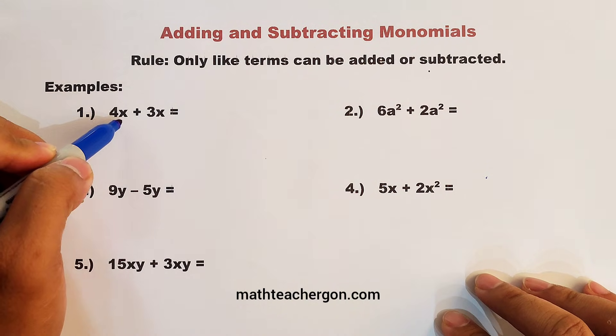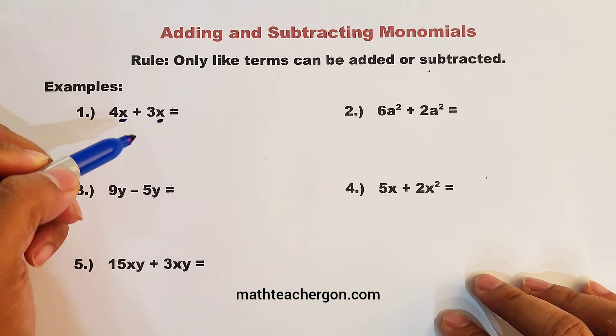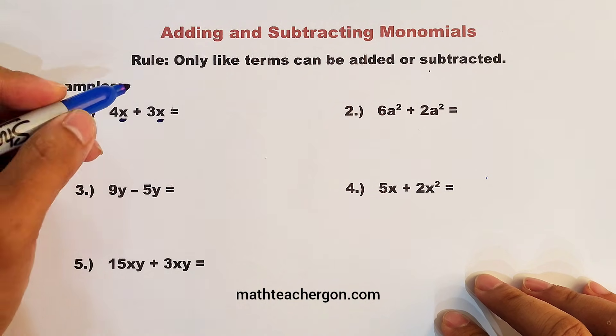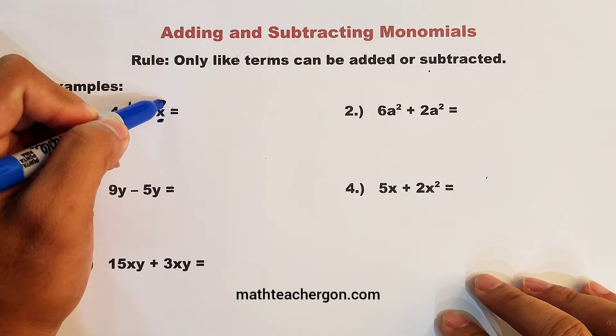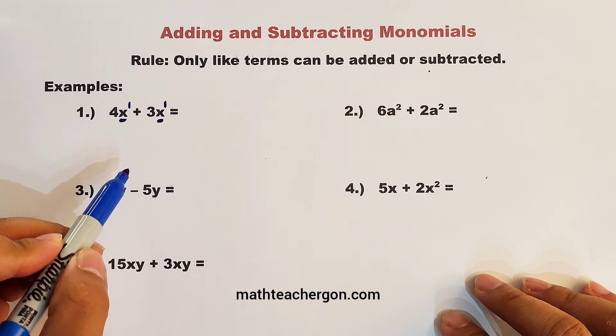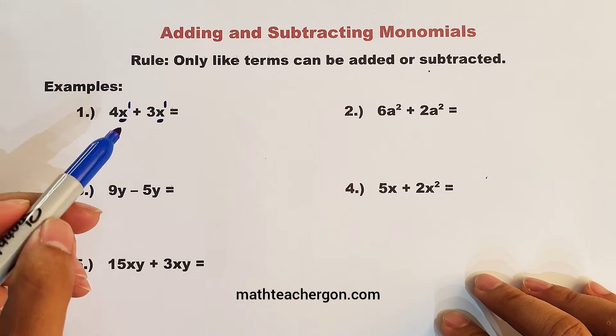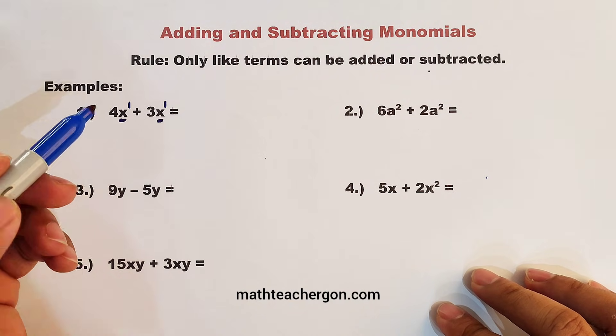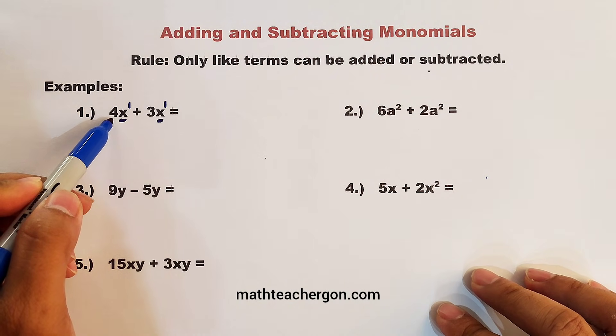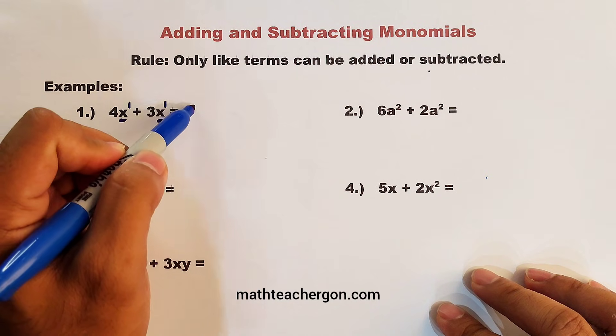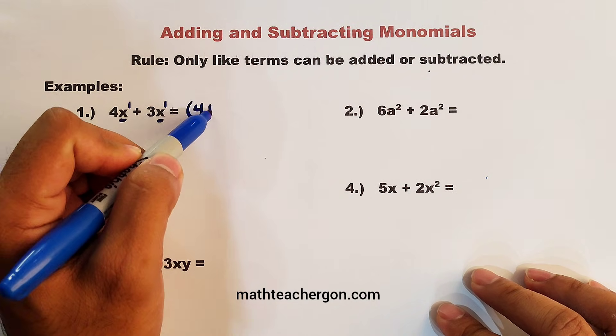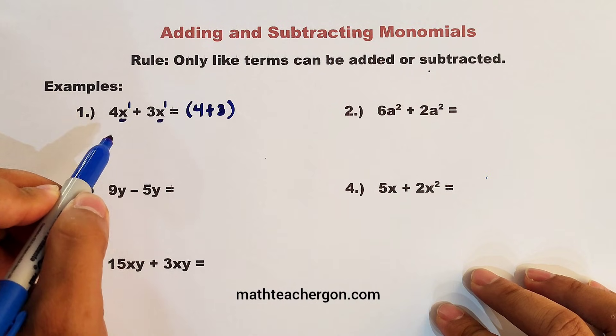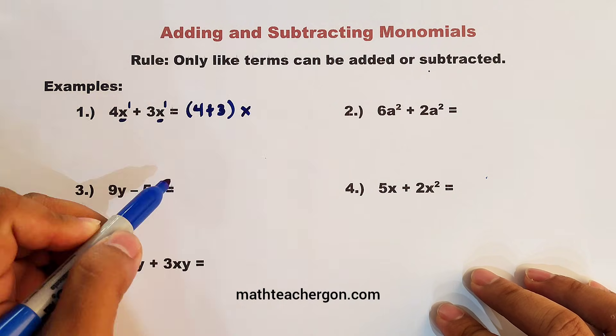Here, we have a variable x and are the exponents the same? Yes. The exponents are invisible one. So they are considered like terms. So how do we perform addition? First, you need to add the coefficients. We have 4 plus 3. Then you will copy the same variable and exponent. And that is x.